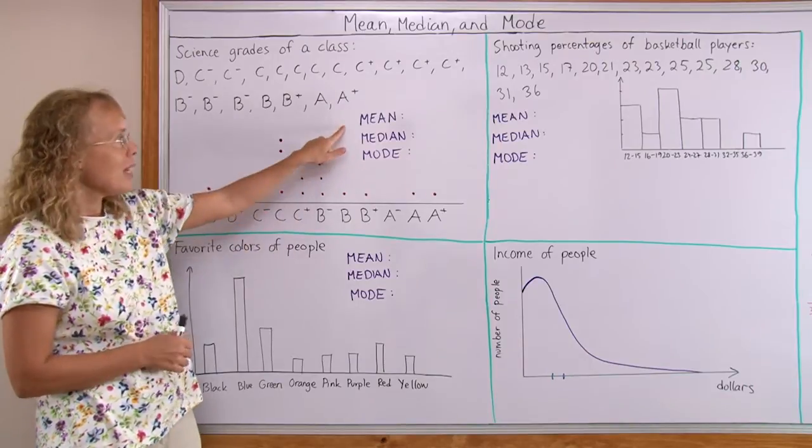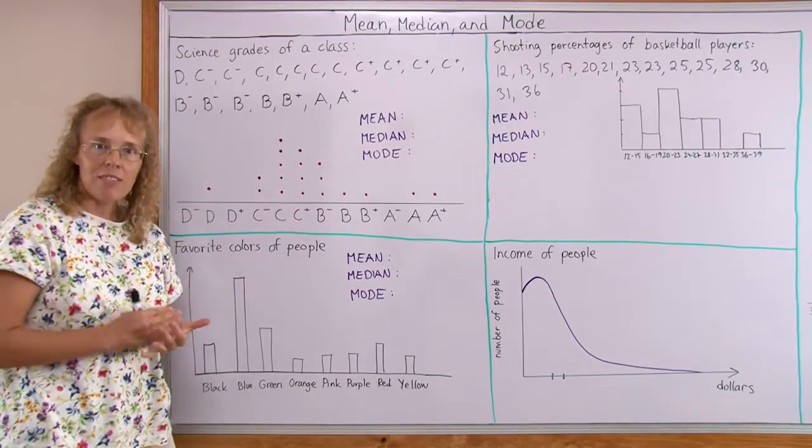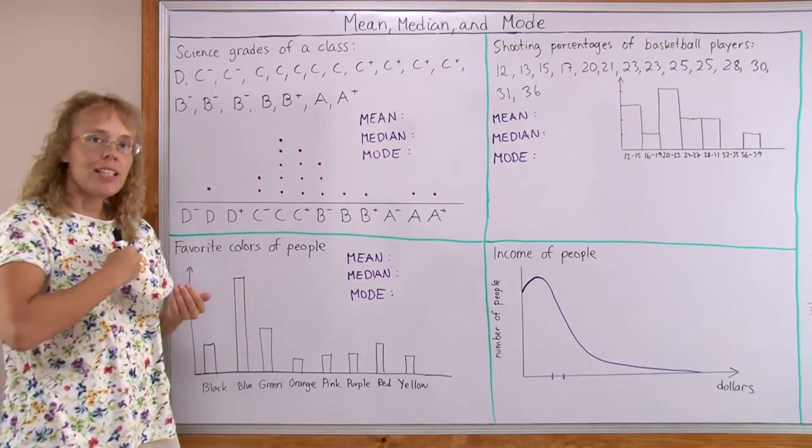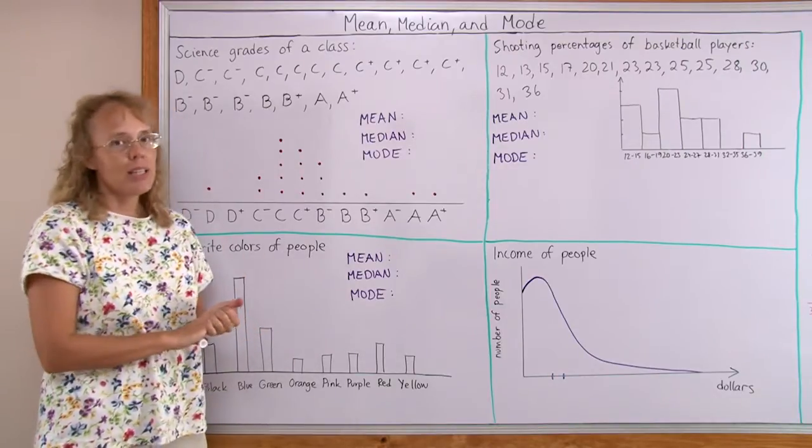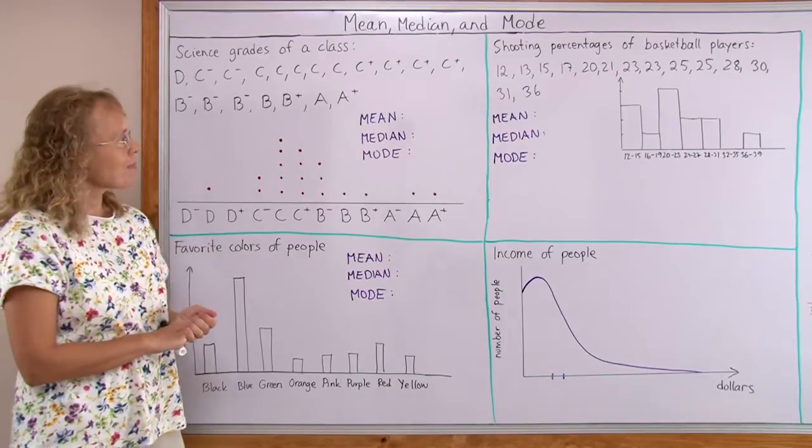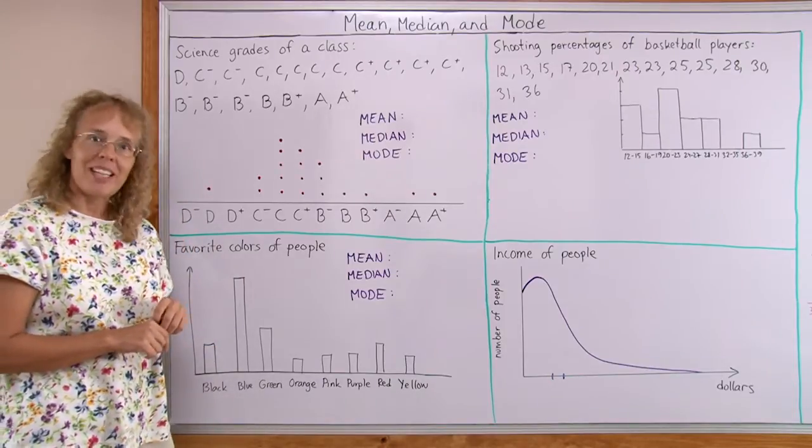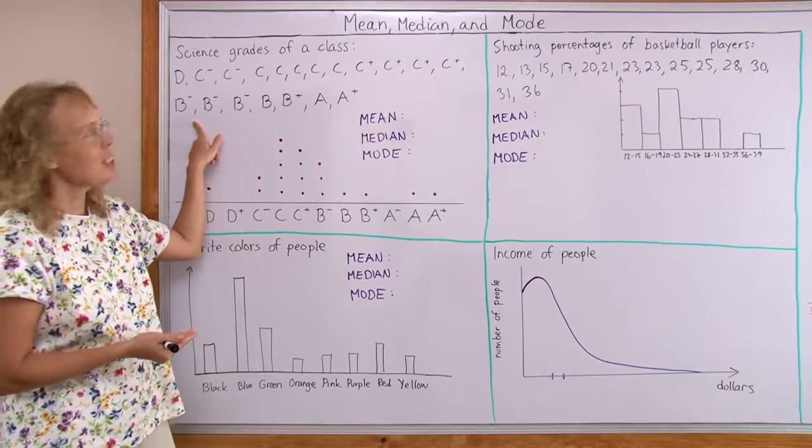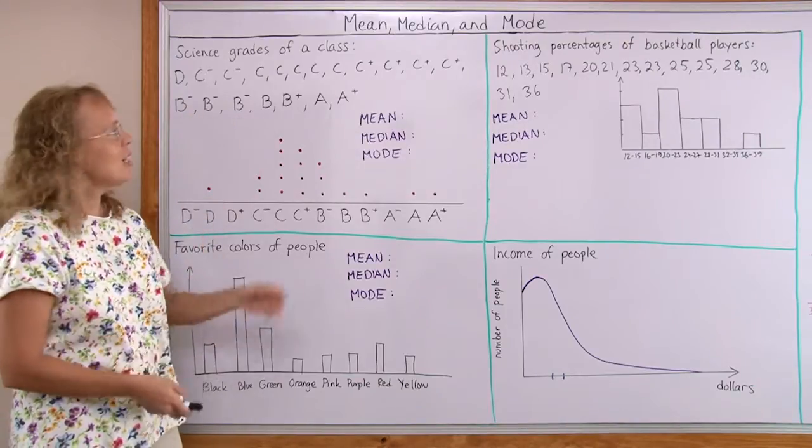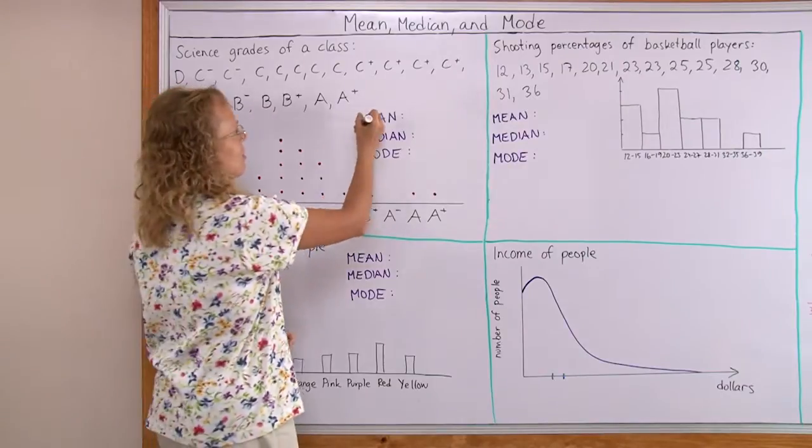Now mean is the regular average which is calculated by adding all of the values together and dividing by how many observations there are. In this case we cannot calculate the mean because these are not numbers. You cannot add them. So mean is not available.